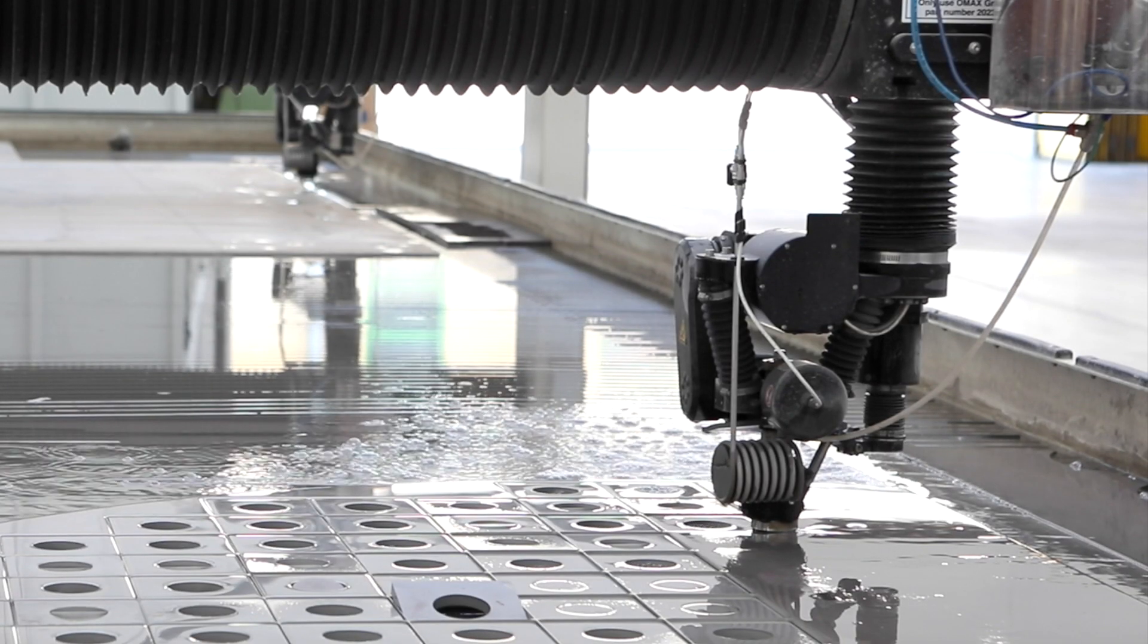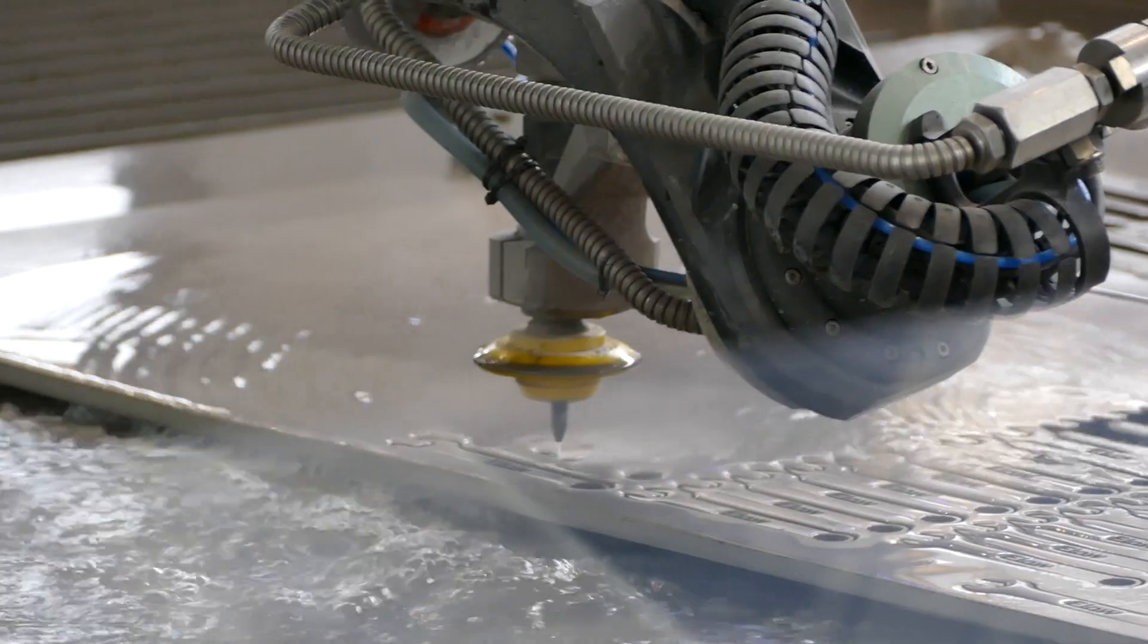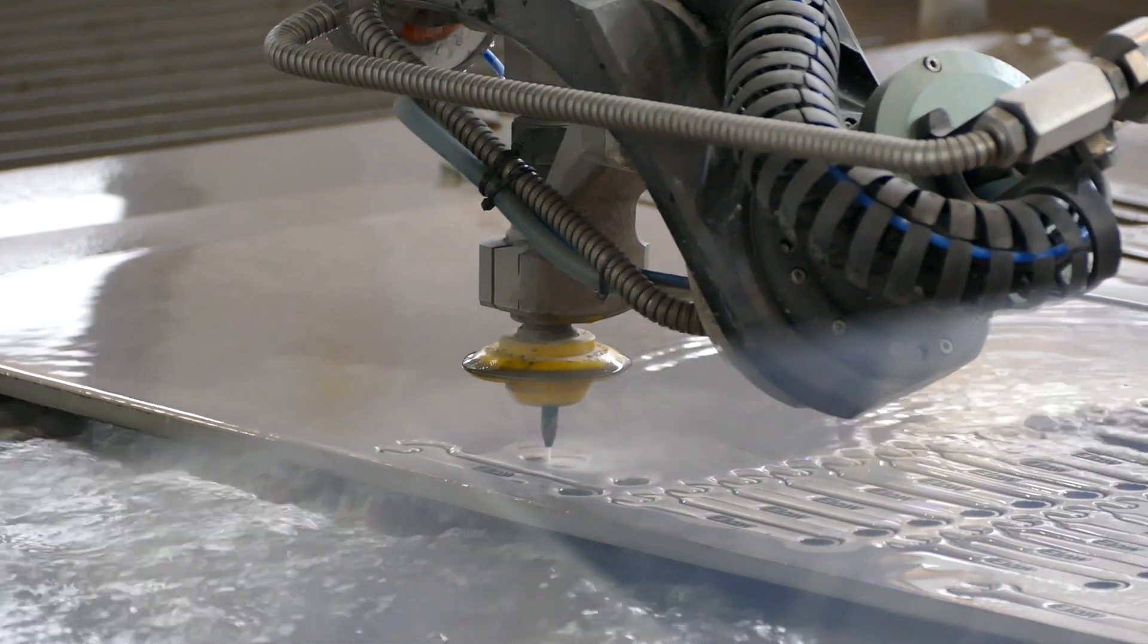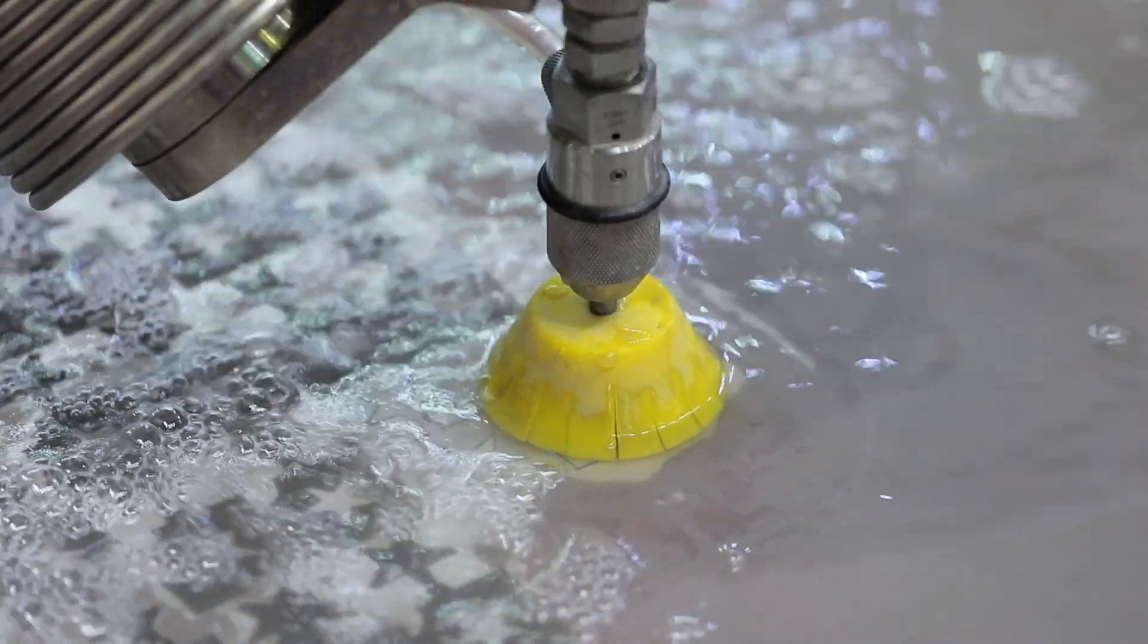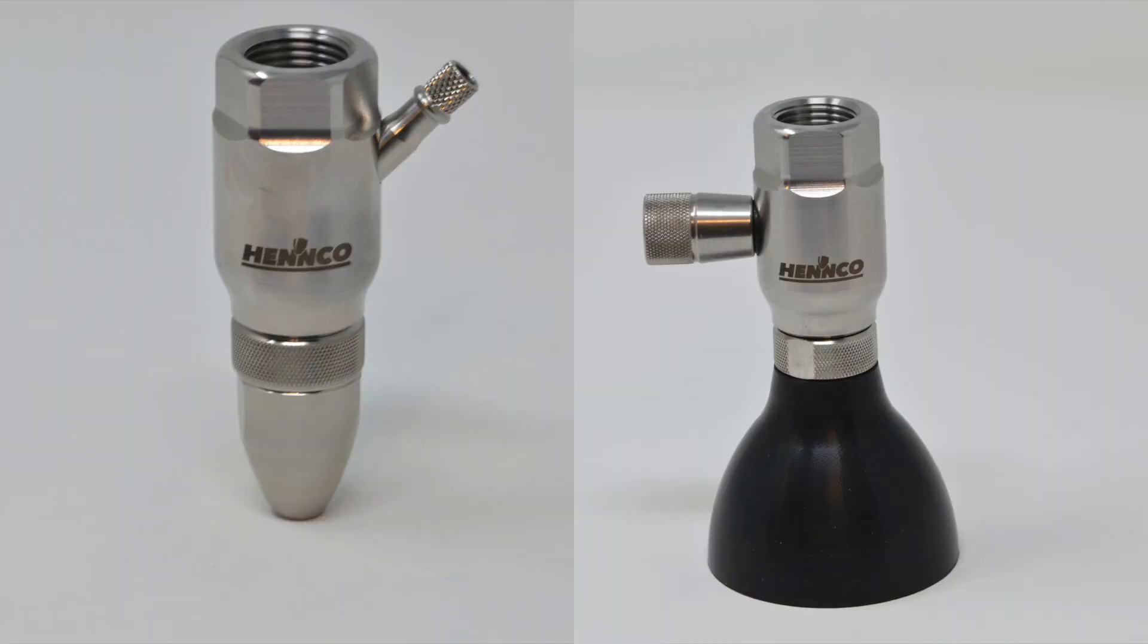So let's jump right in. With all the different abrasive cutting heads available in the market today, there's really only two styles of cutting heads. The difference between the two cutting heads has to do with how the abrasive enters the cutting head. The first is the angled inlet style and the other is the 90 degree inlet style.